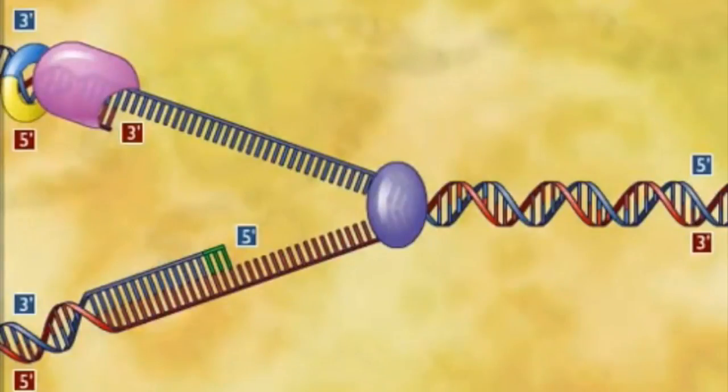When DNA helicase opens up the replication fork, the result is a leading and lagging strand. The leading strand has the 3' end, and the end near the replication fork is the 5' end.